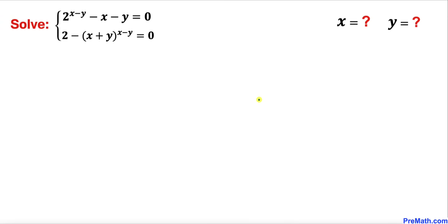Welcome to pre-math. In this video we have got a system of two equations: 2^(x−y) − x − y = 0, and the second equation is 2 − (x+y)^(x−y) = 0. We are going to find the values of x and y.